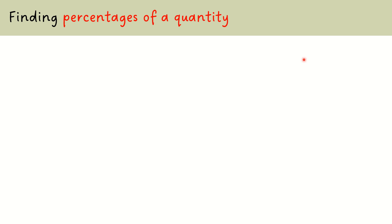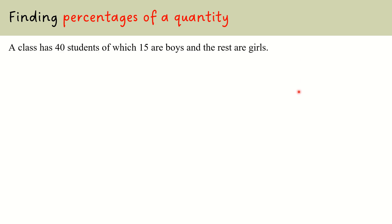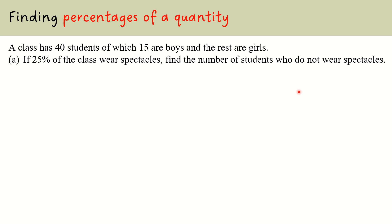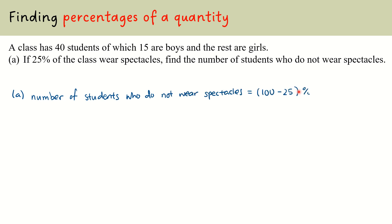We will next learn how to find the percentage of a quantity. A class has 40 students, of which 15 are boys and the rest are girls. In the first part, if 25% of the class wear spectacles, we find the number who do not wear spectacles. We take 100% minus 25%, times 40: since 25% wear spectacles, 75% do not, and 75% of 40 gives us 30.